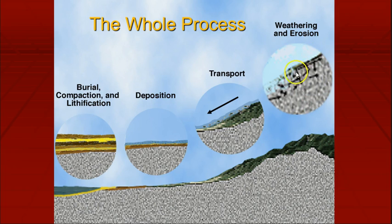The whole process: weathering, erosion, transport, deposition, and then burial, compaction, and lithification. Burial is where material gets covered up by other stuff, compaction is where it gets squished, and lithification is where it turns into stone. That is it for these video notes. If you have any questions please ask, and in class we will be looking at volcanoes and maybe a little bit about earthquakes as well. Thanks for listening and have a good day.